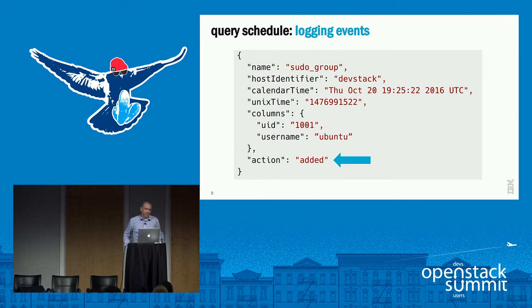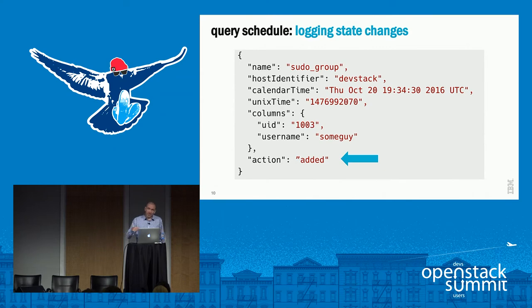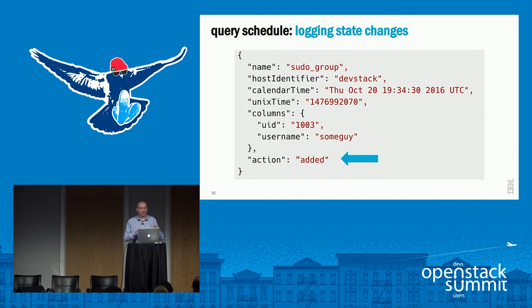It'll generate logging events for each result. Here's a truncated version of a logging event that's been reformatted so you can read it. You can also add custom decorators that annotate each log entry with whatever additional host information you'd like. In between a logging schedule window, I'll make a change to the system and add a user to that group. The only event transmitted out to my log management system is that single change — we're detecting stateful changes within the system.